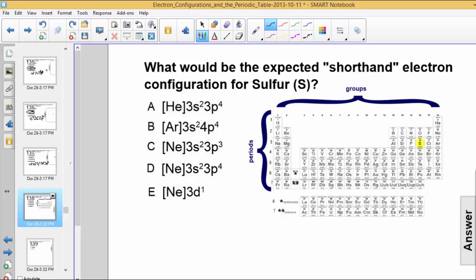Sulfur, as you can see, is in the third period of the periodic table. And the noble gas that precedes sulfur is neon. So the first thing we would write is neon in brackets. Keep in mind that neon represents 10 electrons. And sulfur has a total of 16 electrons, so we need 6 more electrons to complete the configuration.